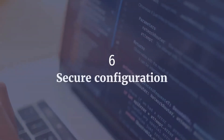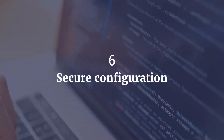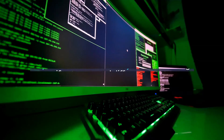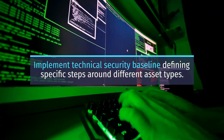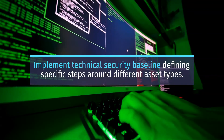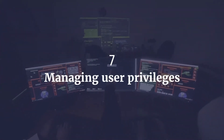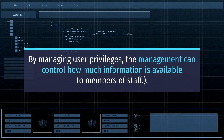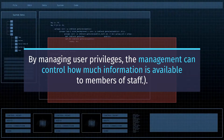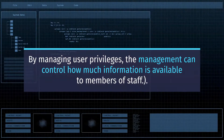6. Secure configuration. Implement a technical security baseline defining specific steps around different asset types. 7. Managing user privileges. By managing user privileges, the management can control how much information is available to members of staff.